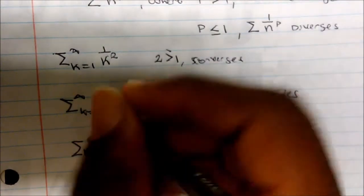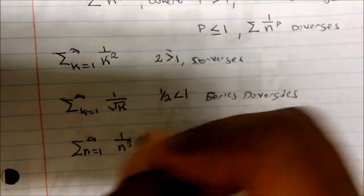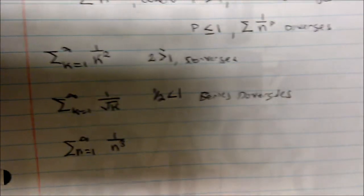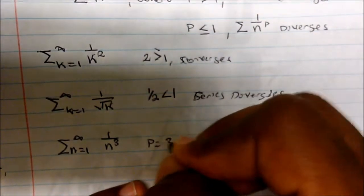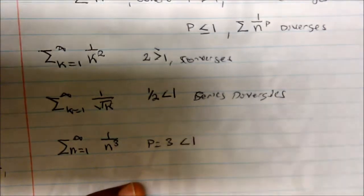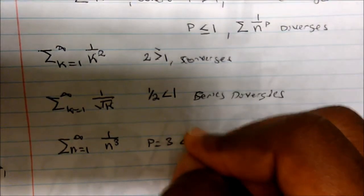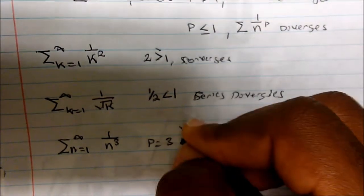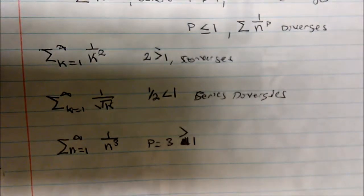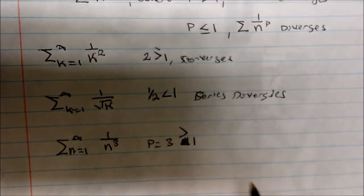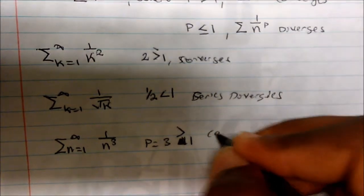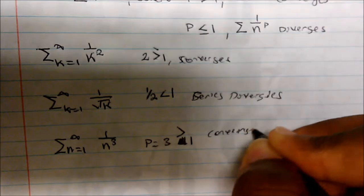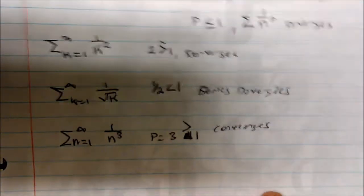What about the sum from n equals one to infinity of one over n cubed? In this case P equals three, which is greater than one, so the series actually converges.